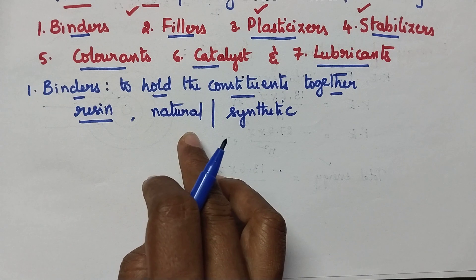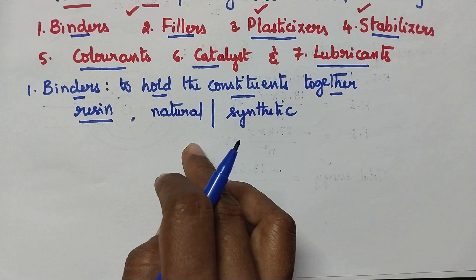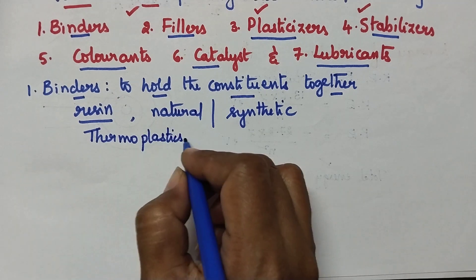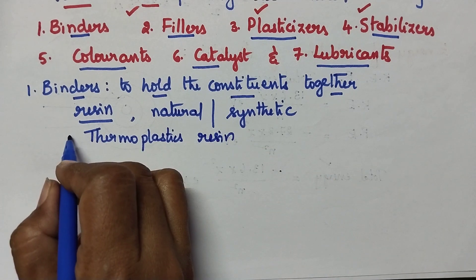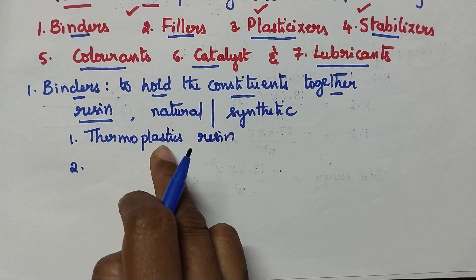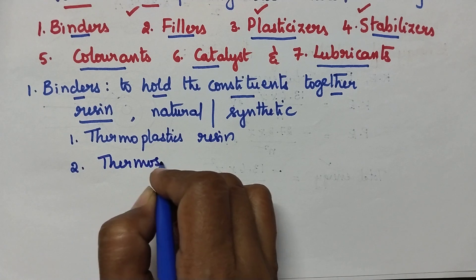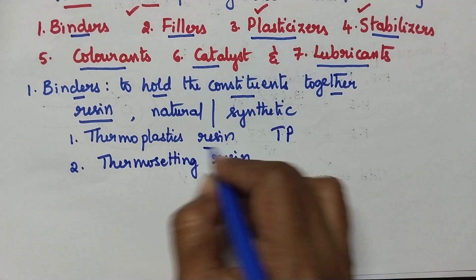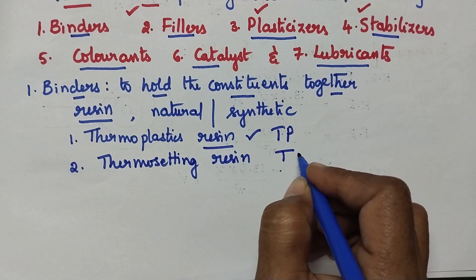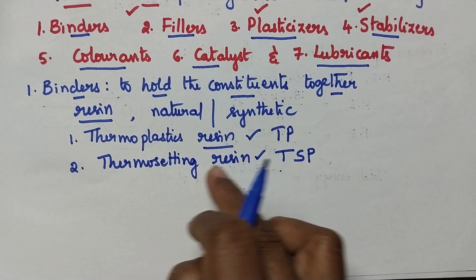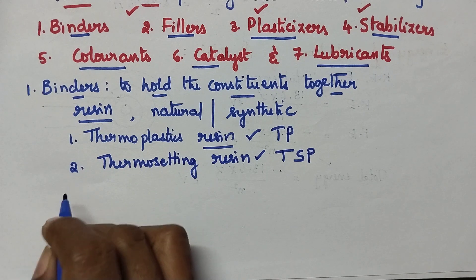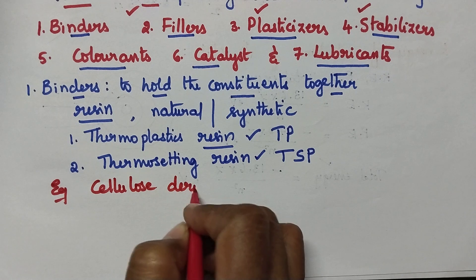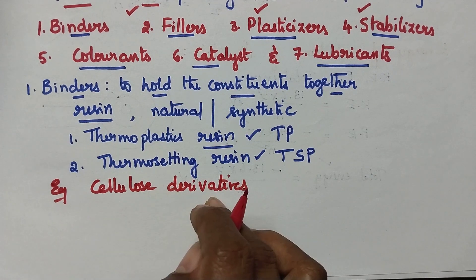We can classify plastics into two types: thermoplastics and thermosetting plastics. Accordingly, binders can be classified into two categories — thermoplastic resins and thermosetting resins. For the preparation of thermoplastics, we start with thermoplastic resins, and for thermosetting plastics, we start with thermosetting resins. Cellulose derivatives are good examples of binders.